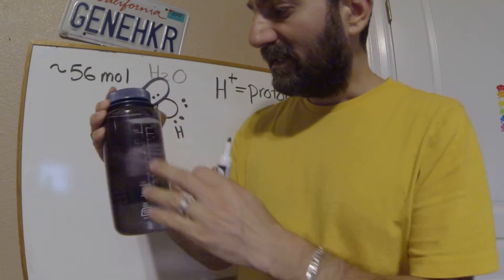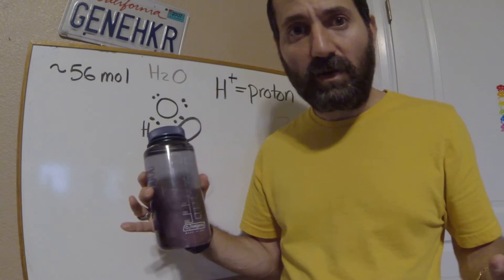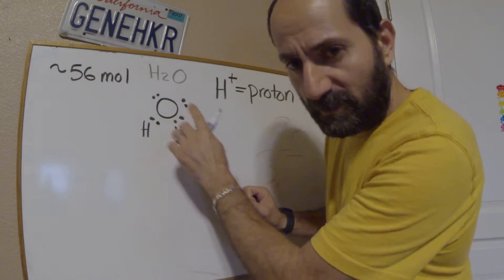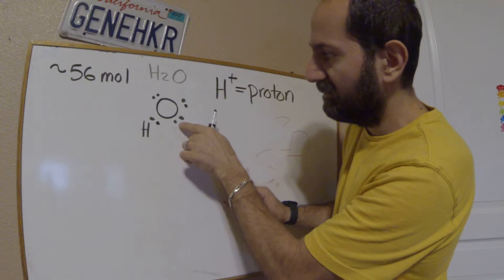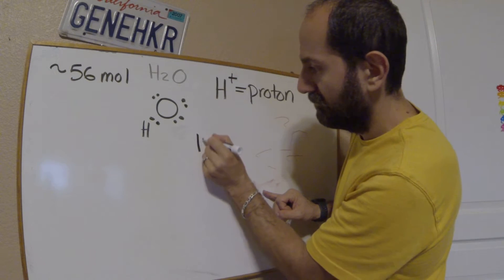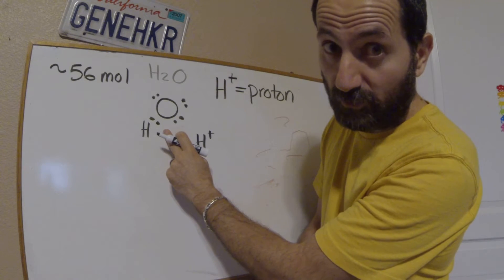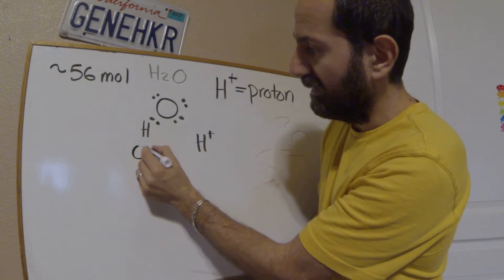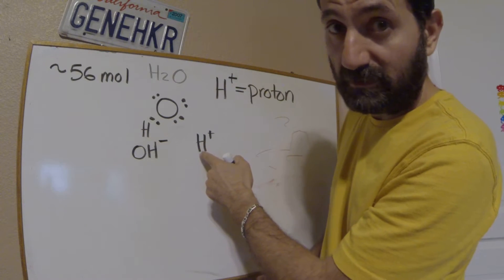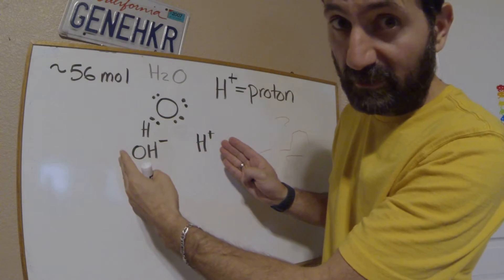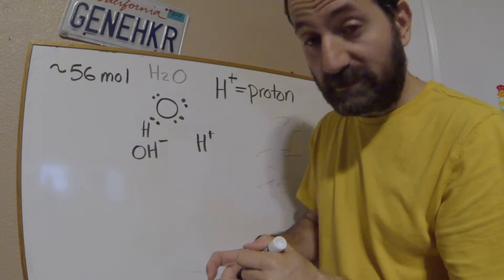In a liter of water I have 56 moles of water, and some of my water molecules have broken apart — they've ionized. That means one of the hydrogens has left, but not the whole hydrogen — just the proton, the H+, leaving its electron behind. What's left over is OH, called hydroxide. Because it has the extra electron the hydrogen left behind, it's OH minus. So you've got a proton and a hydroxide ion — that's ionized water.